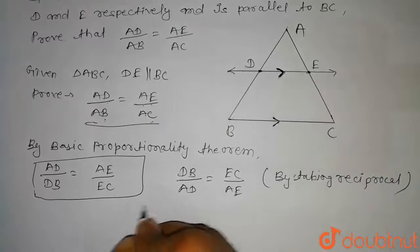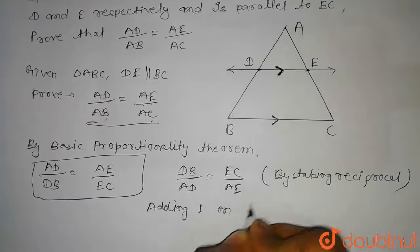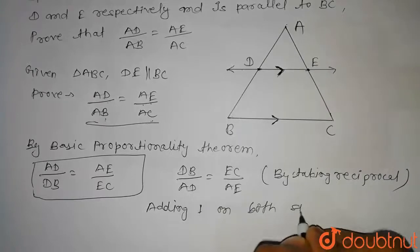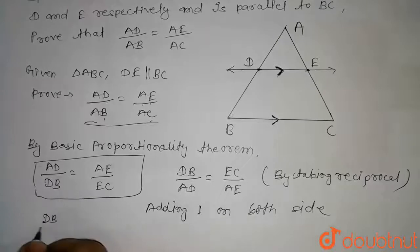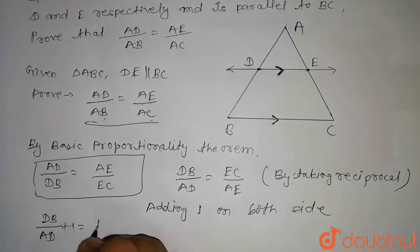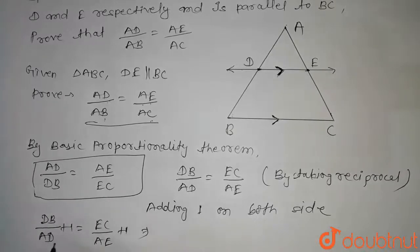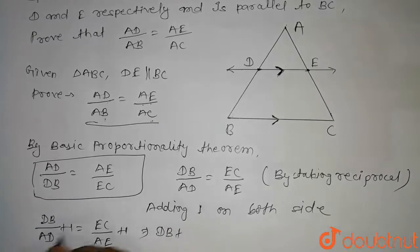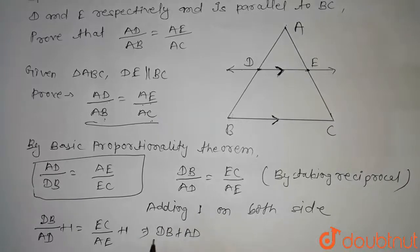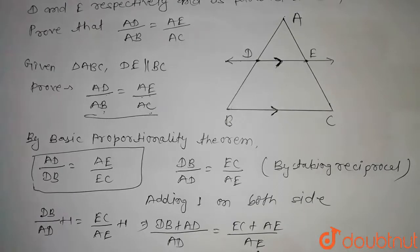we can write this equation as DB divided by AD equal to EC divided by AE by taking reciprocal. Now, on adding 1 on both sides, we get DB divided by AD plus 1 equal to EC divided by AE plus 1. And on solving this, we get DB plus AD divided by AD equal to EC plus AE divided by AE.